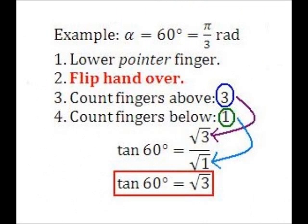From our example of 60 degrees, we can evaluate tangent. Lower your pointer finger, flip your hand over, and count how many are above, 3. The number below is just 1. So the tangent of 60 degrees is the square root of 3 over the square root of 1, which is simply the square root of 3.